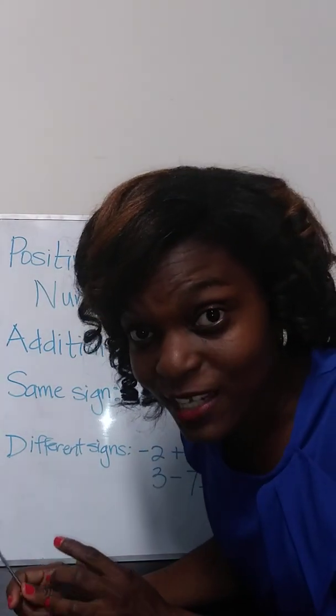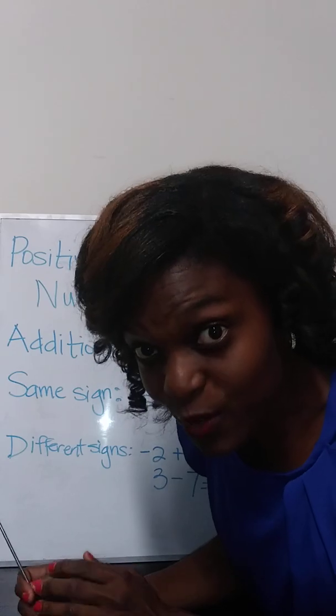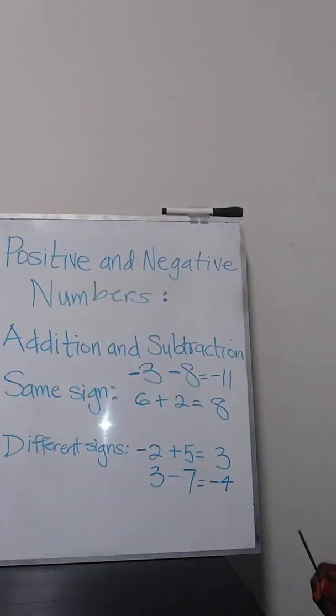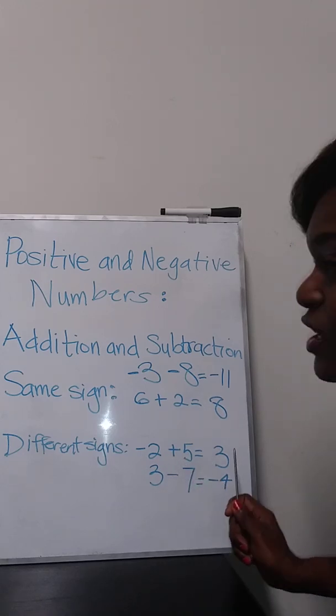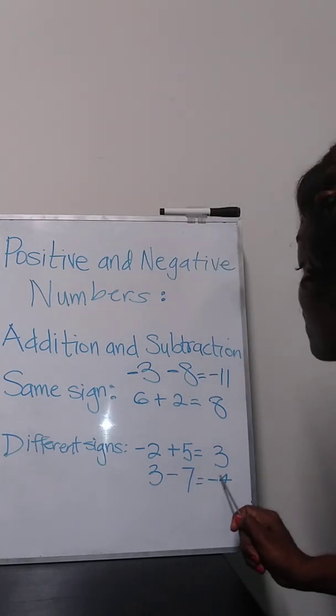If you have two numbers with different signs, you subtract the numbers and you keep the sign of the larger number. For example, negative 2 plus 5 gives you 3. 3 minus 7 gives you negative 4.